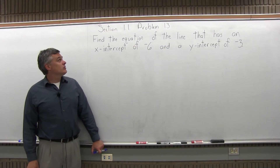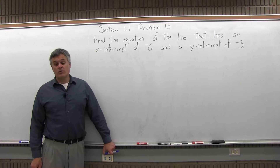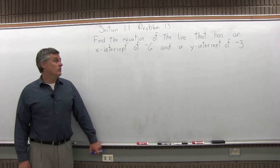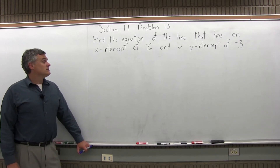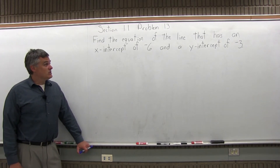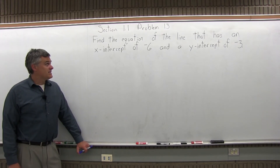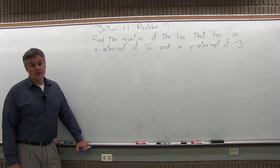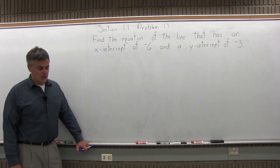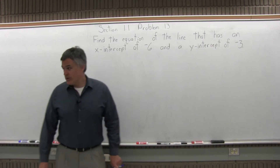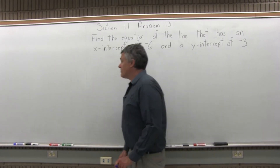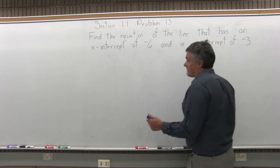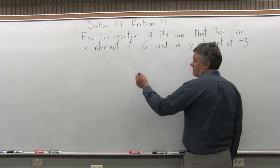This is problem number 13 from the homework from Section 1.1. It says find the equation of the line that has an x-intercept of negative 6 and a y-intercept of negative 3. Ordinarily when we have a problem where we have to find the equation of the line,